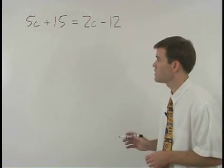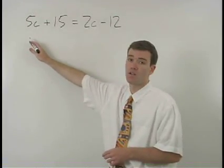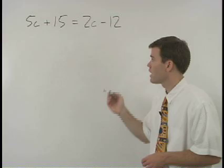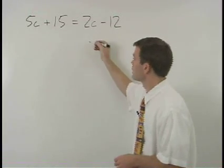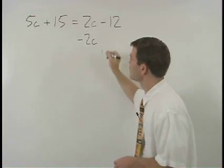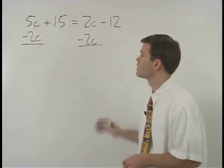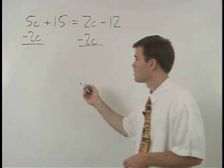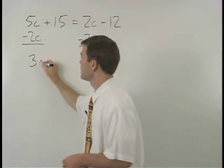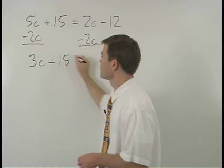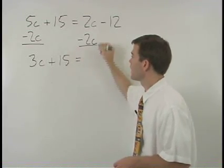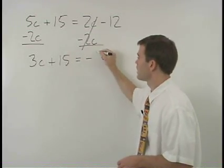So let's put our c's together on the left side of the equation and we do that by subtracting 2c from both sides. On the left we have 3c plus 15 and on the right we have negative 12.